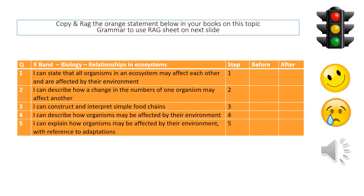So exactly like we do in class, you need to RAG this orange sheet. There is one here for the Expanse, and then on the next page is one for the grammar stream. You need to copy out the information here, and then I want you to RAG it as whether you are happy, sad, ticks or crosses — exactly like we do in lessons.